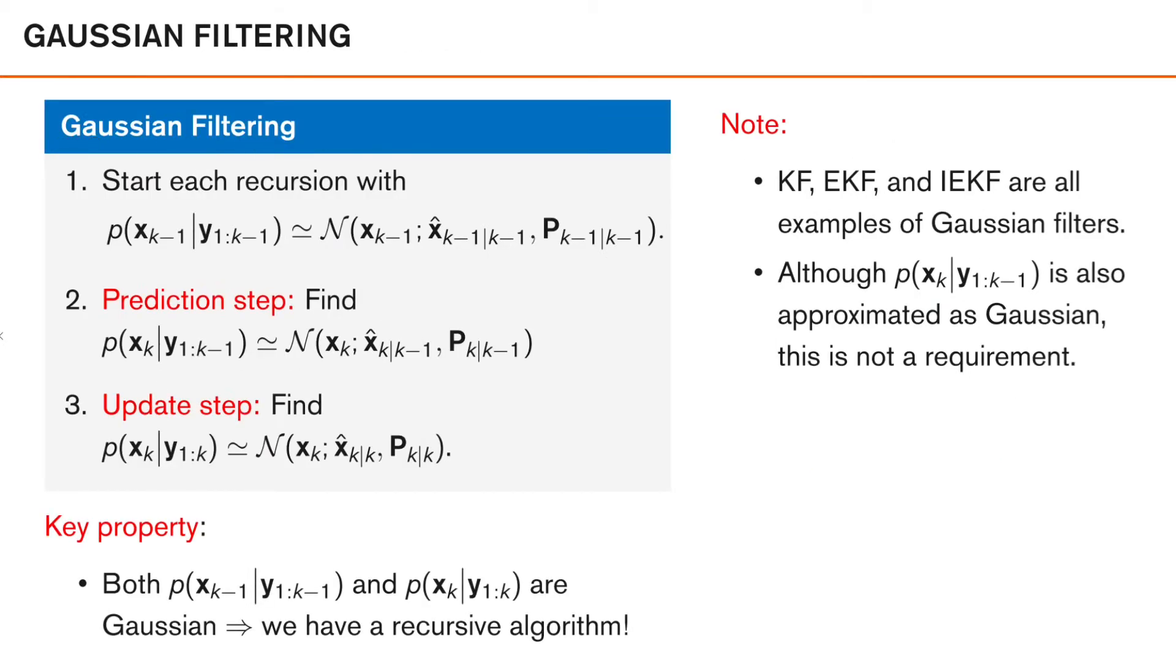A Gaussian filter is characterized by assuming that we start each recursion with a Gaussian prior. That is, we assume that the posterior from the previous time instance is Gaussian with this mean and this covariance. In the prediction step and the update step in the Gaussian filter, we also want to find the predicted density and the posterior density as Gaussian densities. That is, we want to find the means and the covariances of these Gaussian densities that either describe our predicted and posterior densities exactly, as in the Kalman filter case, or at least approximately as in the extended Kalman filter. The key aspect here is by assuming that the posterior from the previous time instance, that is the prior in the current recursion, and the updated posterior are both Gaussian, we have a recursive algorithm as we are starting and ending with the same type of density.